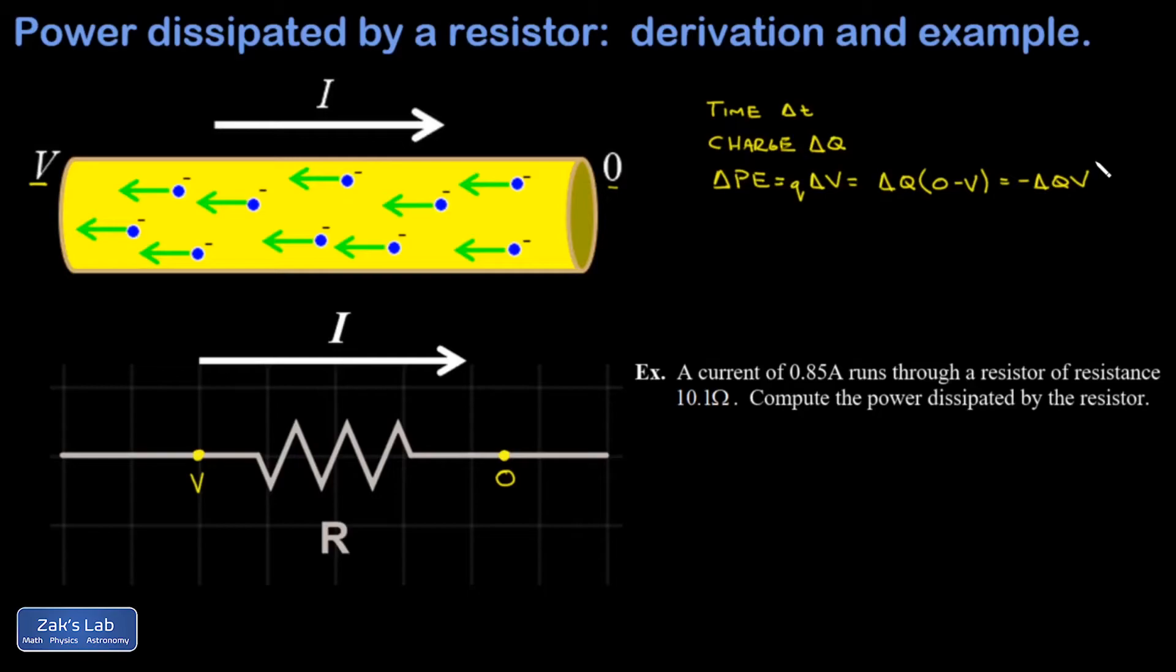So that energy had to go somewhere. And where did it go? It increased the temperature of the resistor. In other words, this energy has been thermalized. So I can say the amount of energy dissipated as heat is going to be the opposite of this loss of energy of our charge carriers. And that's delta Q times V.